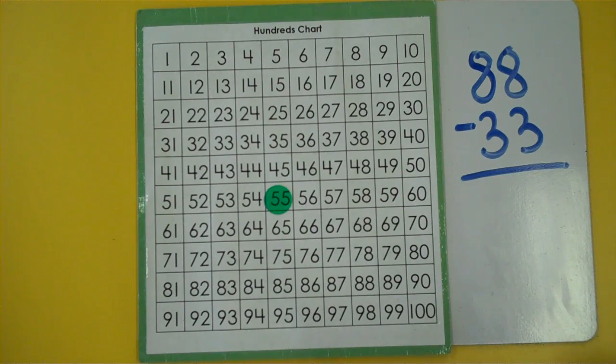Now if you sometimes count too fast or lose track, it's always a good idea to double check, especially when you start to move both up and sideways. So I'm going to double check my answer before I write it down. I'm going to start at 88. I'm going to take away 33.